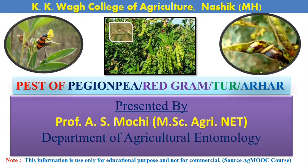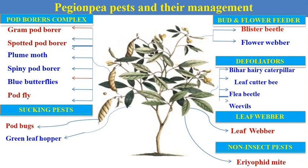In this slide we can see a number of categories of pests which infest the toor crop or pigeon pea crop. The first category is the pod borer complex. The name itself indicates that these are different pod borer pests like gram pod borer, spotted pod borer, plum moth, spiny pod borer, blue butterfly and pod fly — pests which directly cause yield loss because they attack on the economic part of the plant, that is the pod or grain.